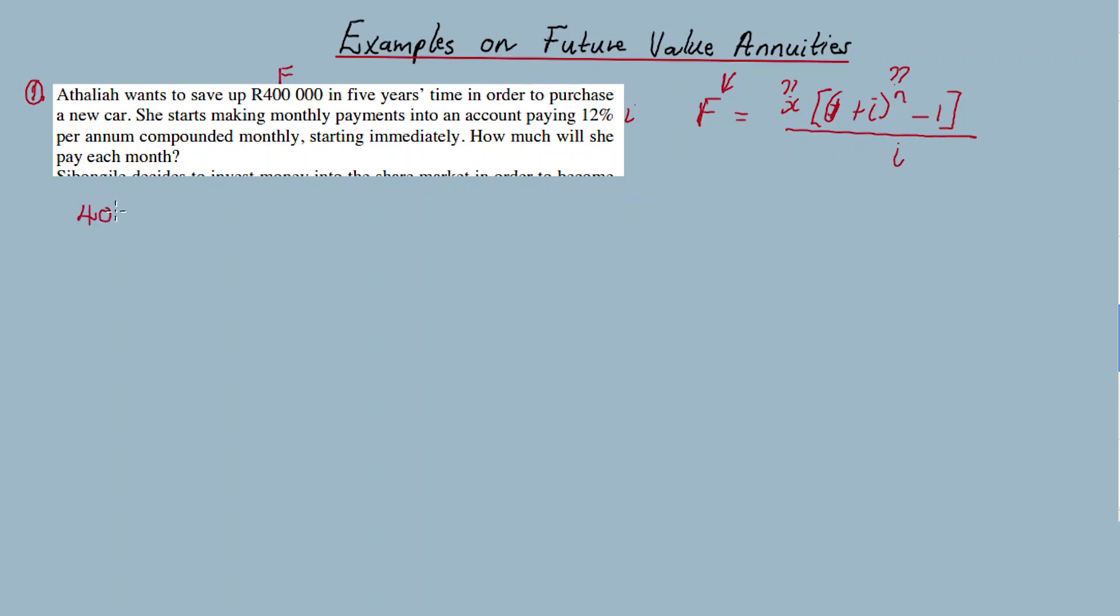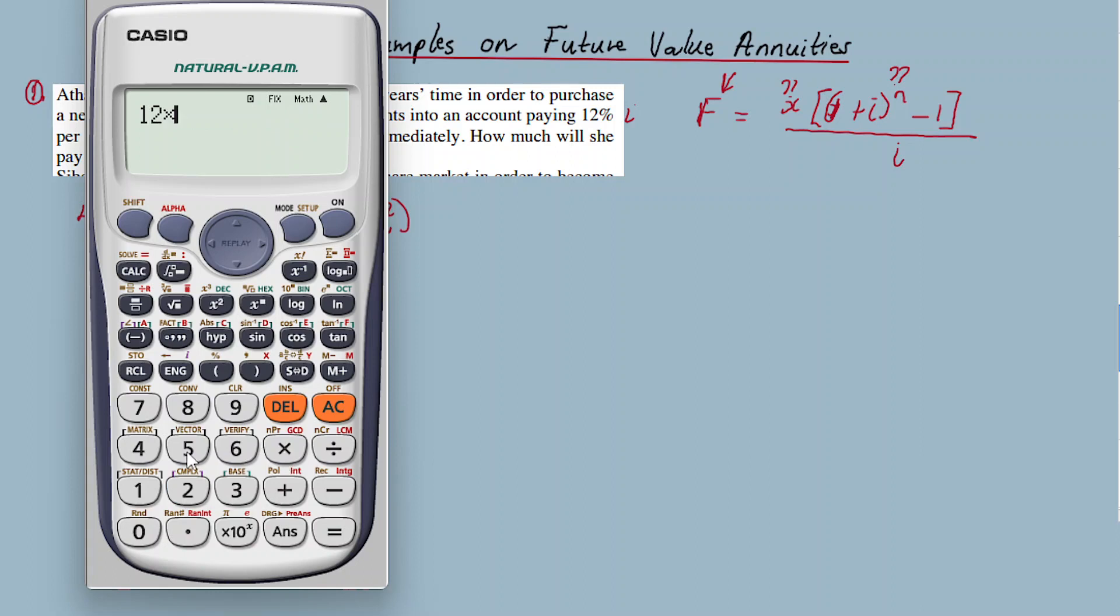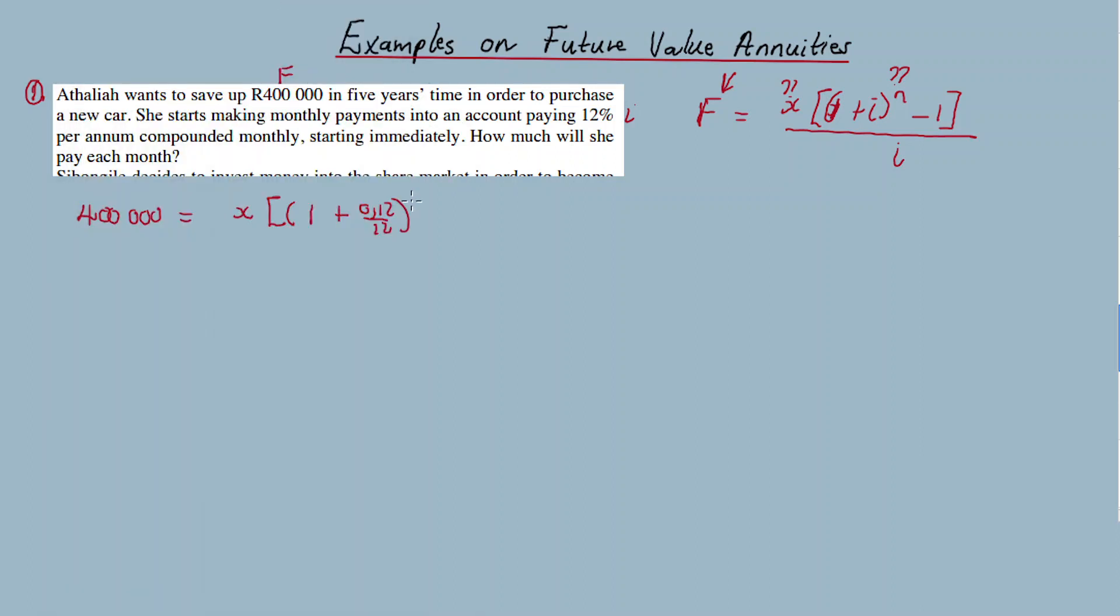Now, F equals 400,000 equals what's the value for X unknown, in bracket one plus what's the value for i, 0.12 over 12, raised to exponent n. What's the value for n? That's five years times 12, so n equals 60. Now since it starts immediately, it means I open the account then start making the payment immediately, so you add one.